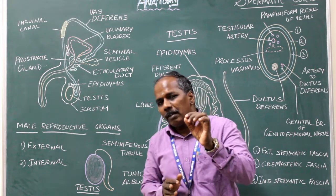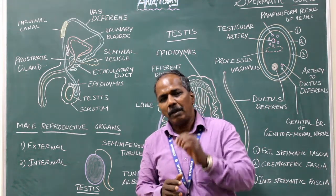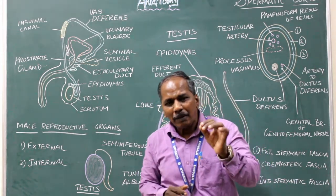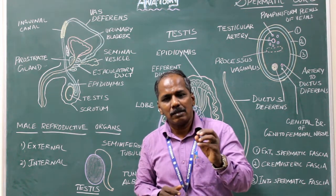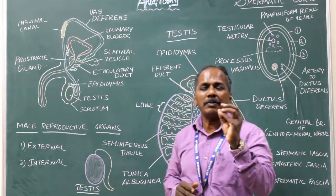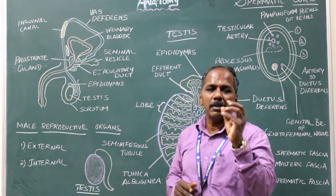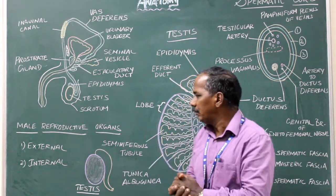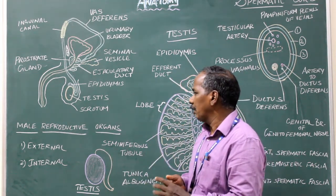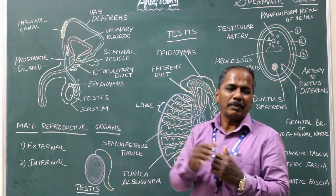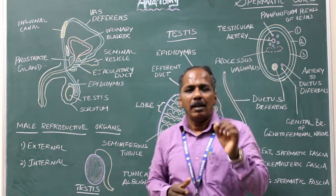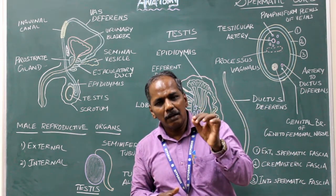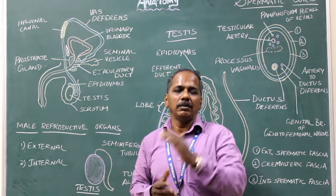The function of the scrotum is to maintain moderate temperature for the testes, because the sperm should be produced only at moderate temperature. Nerve supply: genital branch of genitofemoral nerve and ilioinguinal nerve.